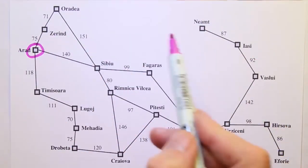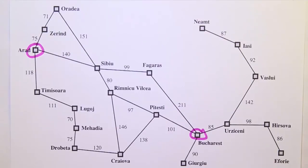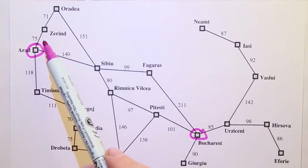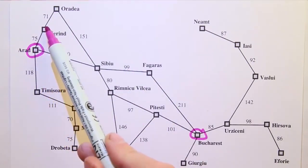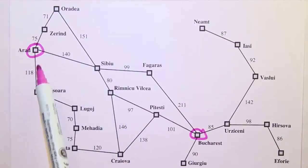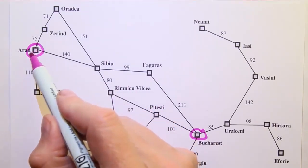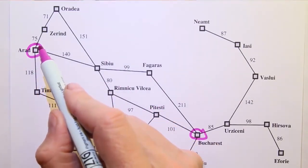The set of all the states is known as the state space, and we navigate the state space by applying actions. The actions are specific to each city, so when we're in Arad there are three possible actions: to follow this road, this one, or this one.